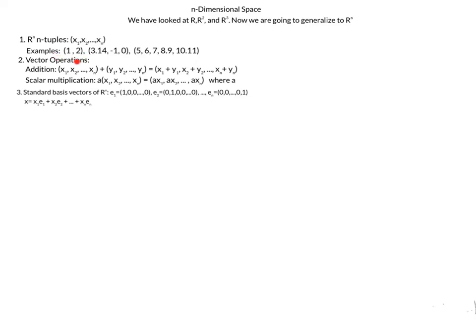We have our same vector operations of addition, and exactly like R2, R3, we just add component by component — x1, y1, x2, y2, etc., up to xn, yn. Scalar multiplication is the same: if A is a scalar, we just multiply each component by A.